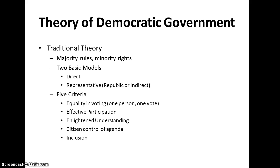We'll start off with the traditional theory. The traditional theory really has two basic models. You can see here we've got direct democracy and representative, or republic, or indirect democracy. The best example of a direct democracy is Athenian democracy — the idea that every citizen votes on everything. In a representative democracy or republic, like the Roman Republic or the United States, we elect people as representatives and they do the work for us.